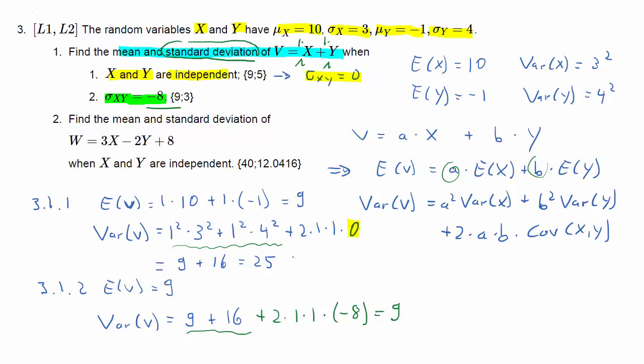Now we're actually being asked to give the standard deviation. So in 3.1.1, that is going to be the square root of 25, which is 5. And in 3.1.2, the square root of 9, which is 3. These are the standard deviations, and therefore we see we've got the right solutions.